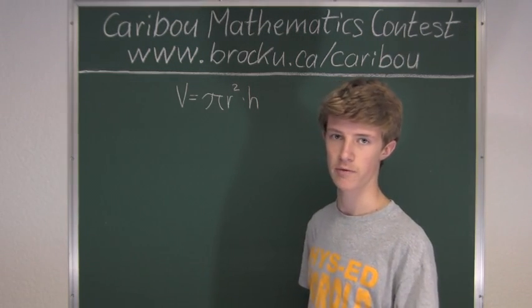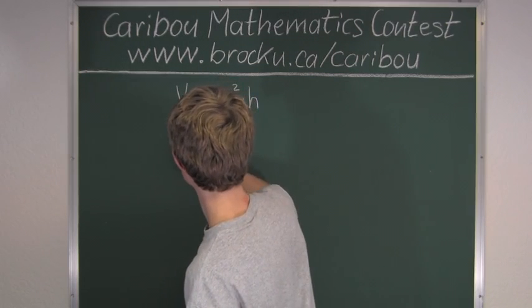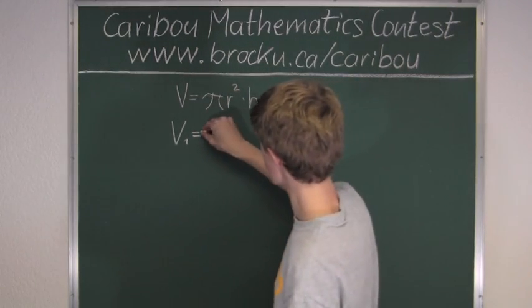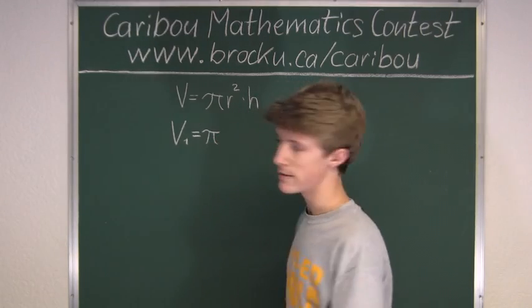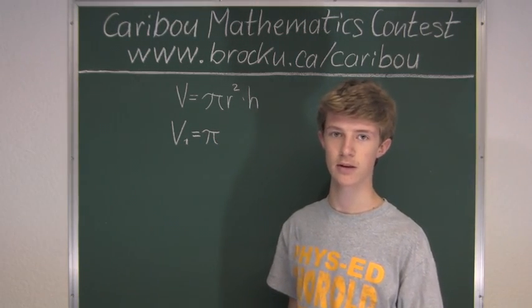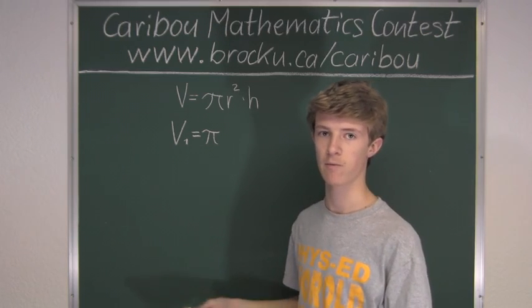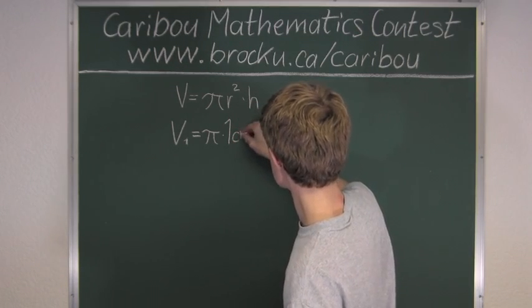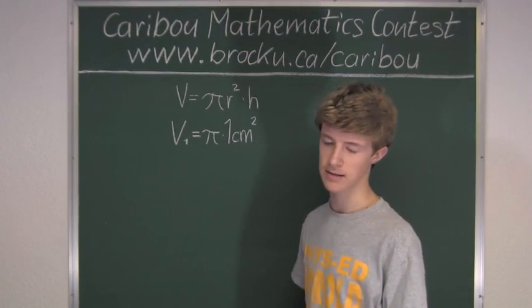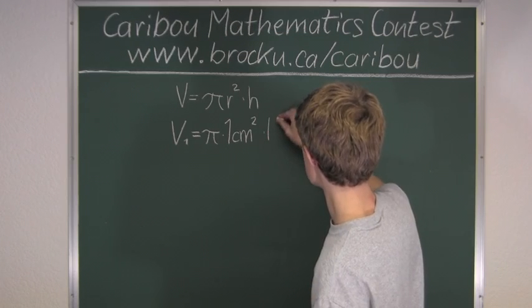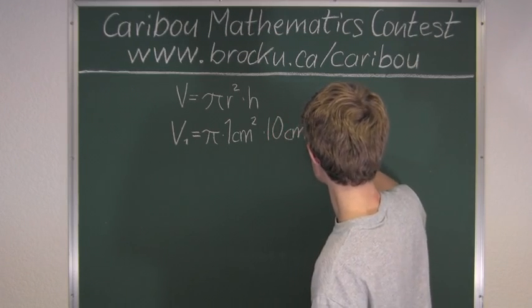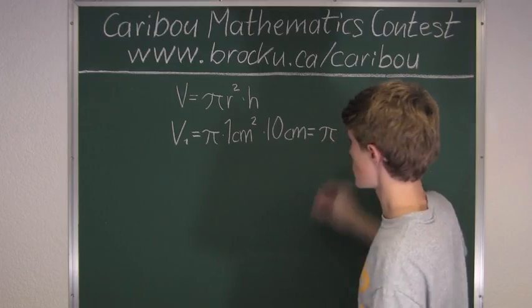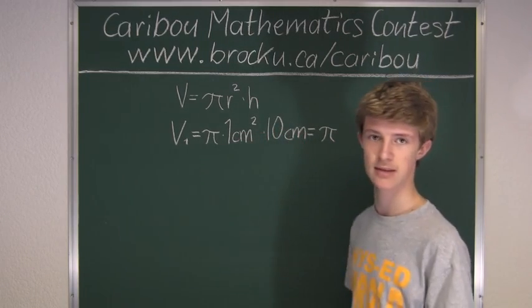Now we will write V1 for the volume of the first cylinder. We have pi times radius squared. We know the radius of the first cylinder is 1 cm, so squared that is 1 cm squared, times the height, which is 10 cm. So we have pi times 10 cm cubed.